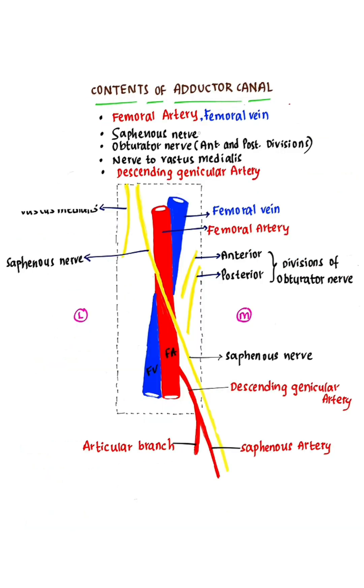Contents of the adductor canal: femoral artery, femoral vein. A branch of the femoral artery — the descending genicular artery — is also present within the canal.